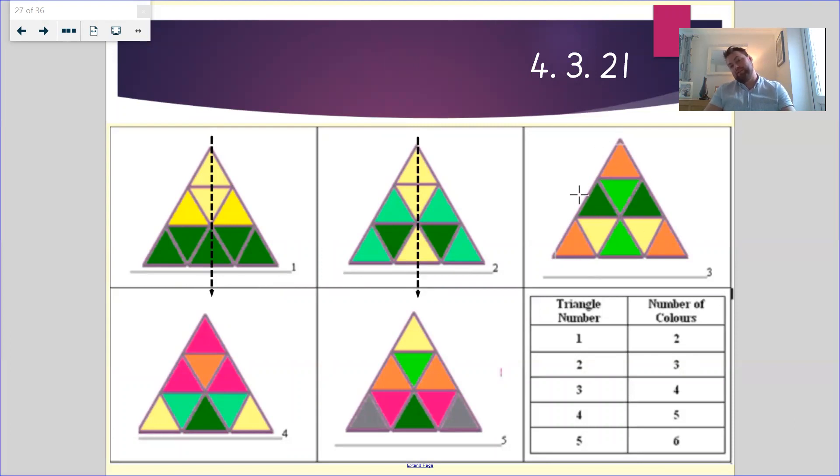Now this one doesn't quite work that way because the greens are different shades of green, aren't they? So we can't have that as a line of symmetry, but we do have a line of symmetry going down the bottom.